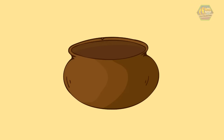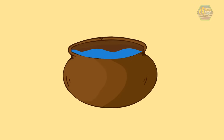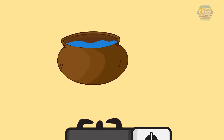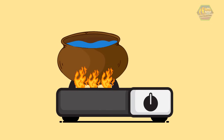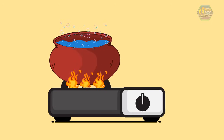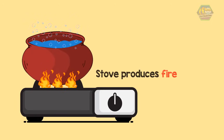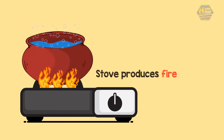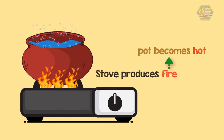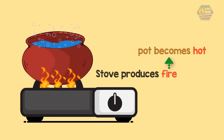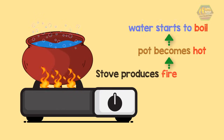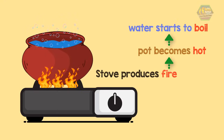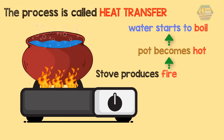Imagine you have a pot full of water and you put the pot on top of the stove. The pot becomes hot, and as time goes by, the water begins boiling. The stove produces fire, and the energy from the fire is then transferred to the pot — that's why the pot becomes hot. Because of that energy transfer, the water starts to boil. That process is called heat transfer.